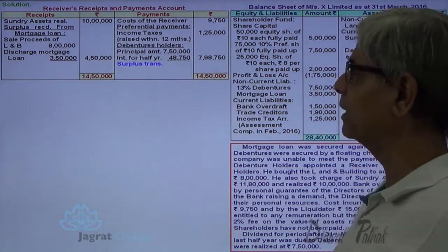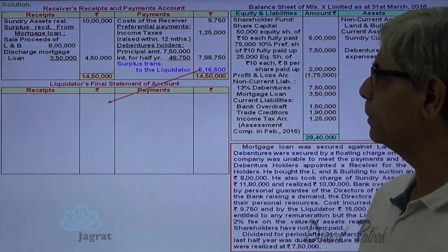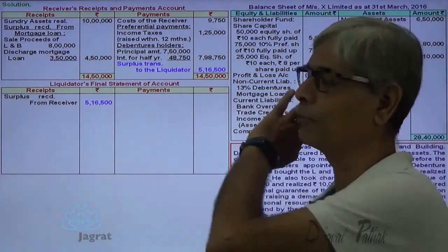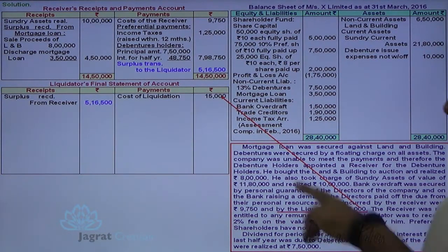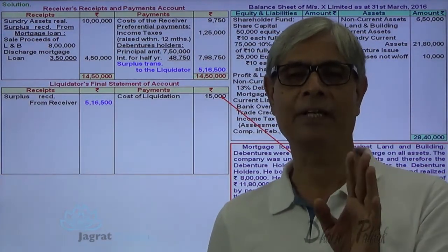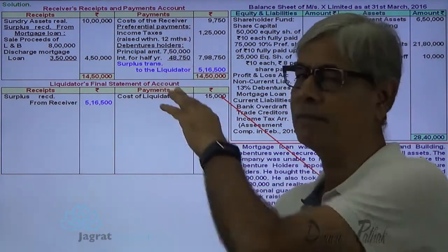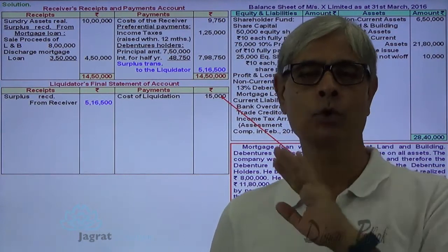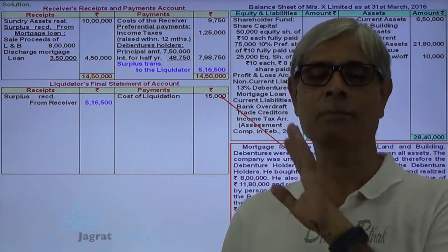The receipts minus payments gives the surplus transferred to the liquidator. Now we shall prepare the liquidator's statement, where this surplus becomes the opening balance received from the receiver. Since the receiver has already sold the assets, the liquidator need not bother about payment to fully secured creditors, preferential creditors, or creditors with floating charge over the assets, as that job is already completed by the receiver.